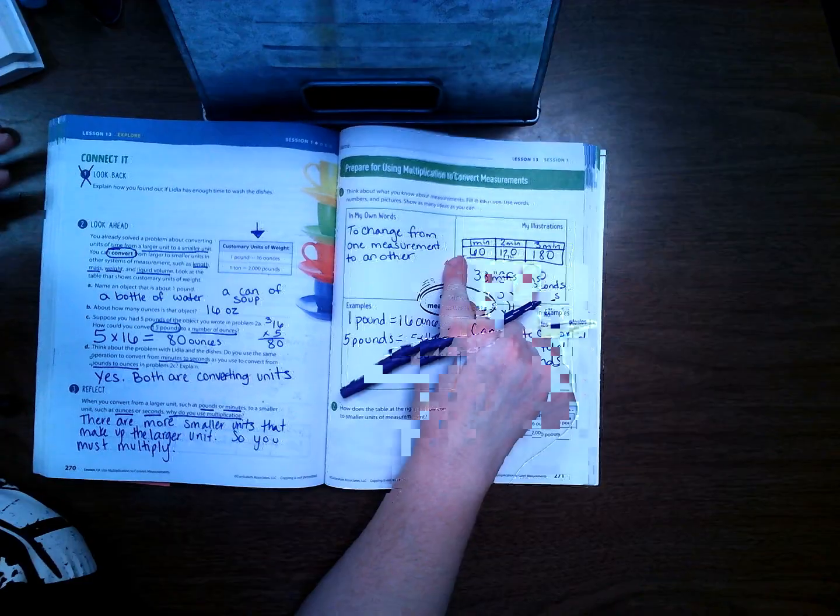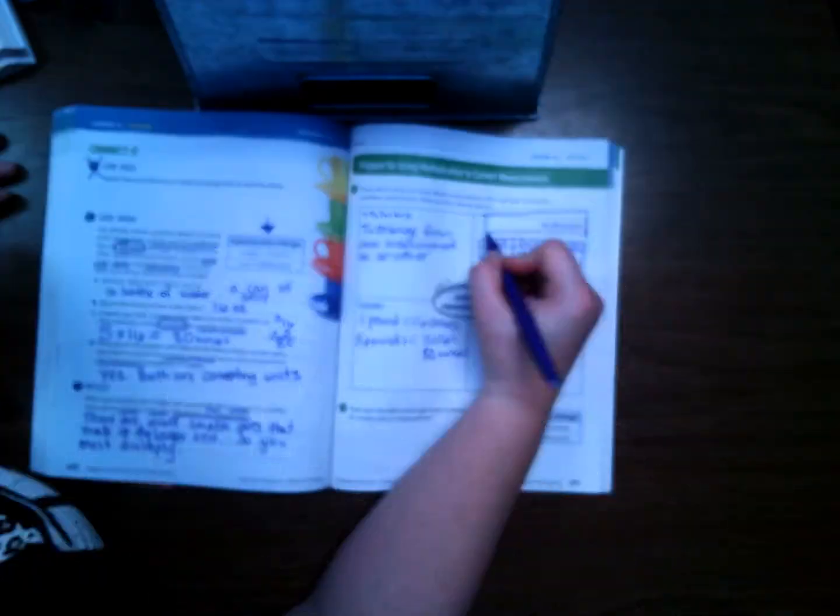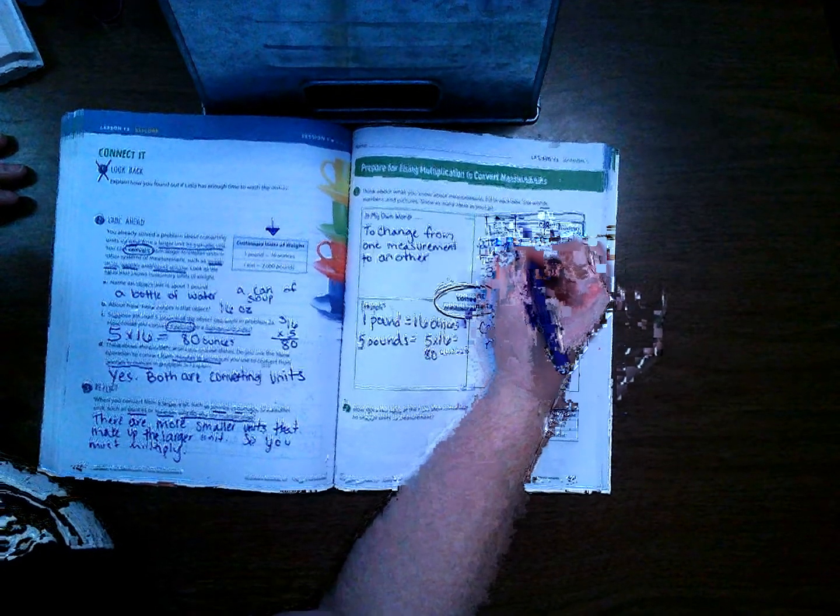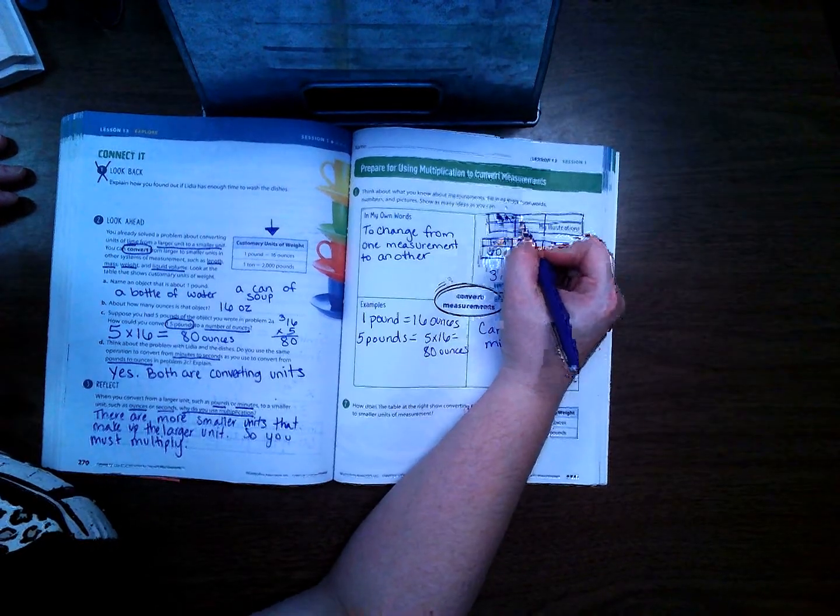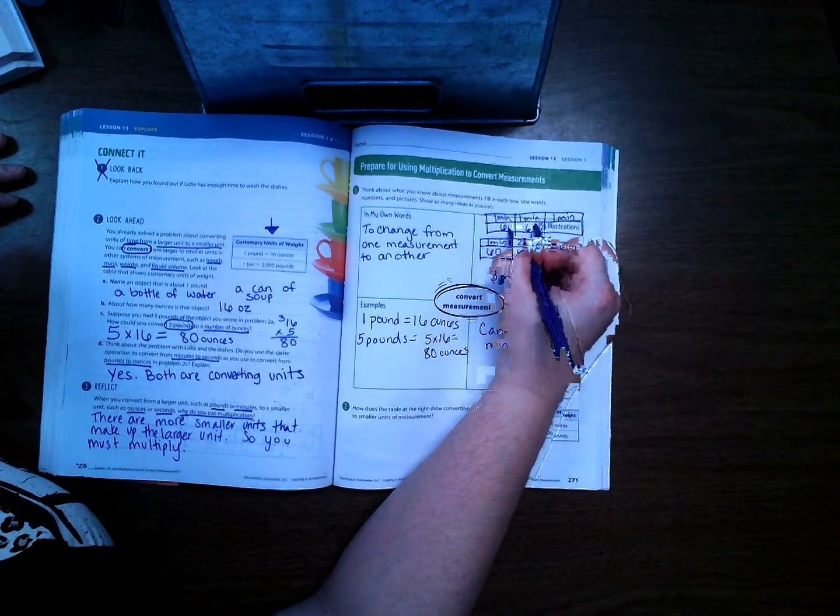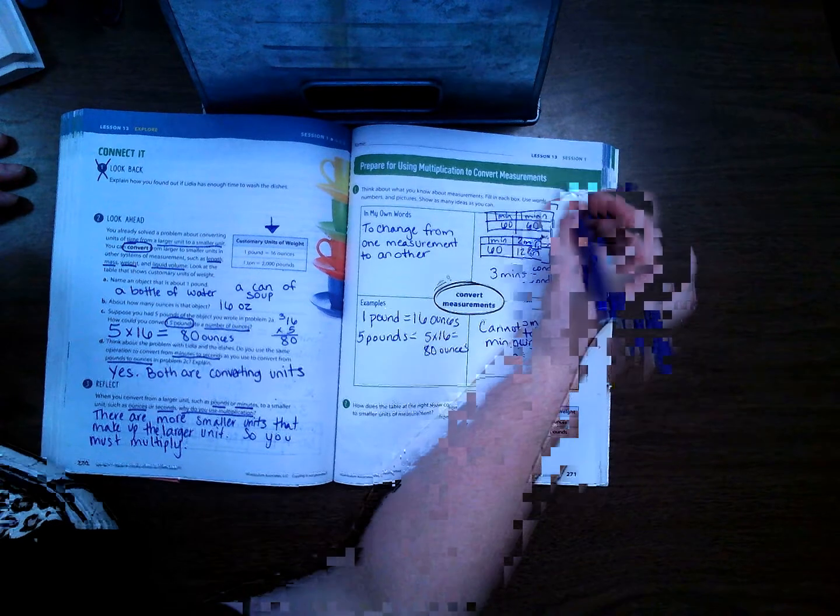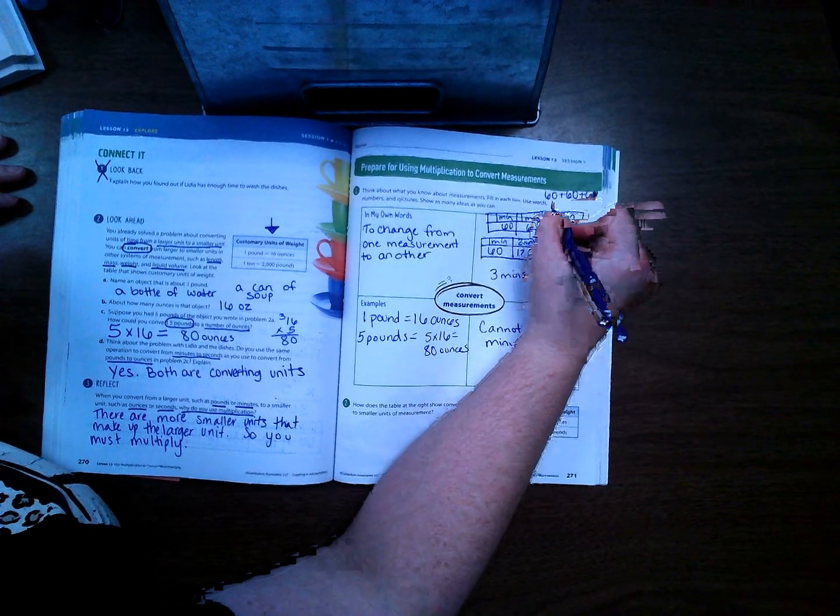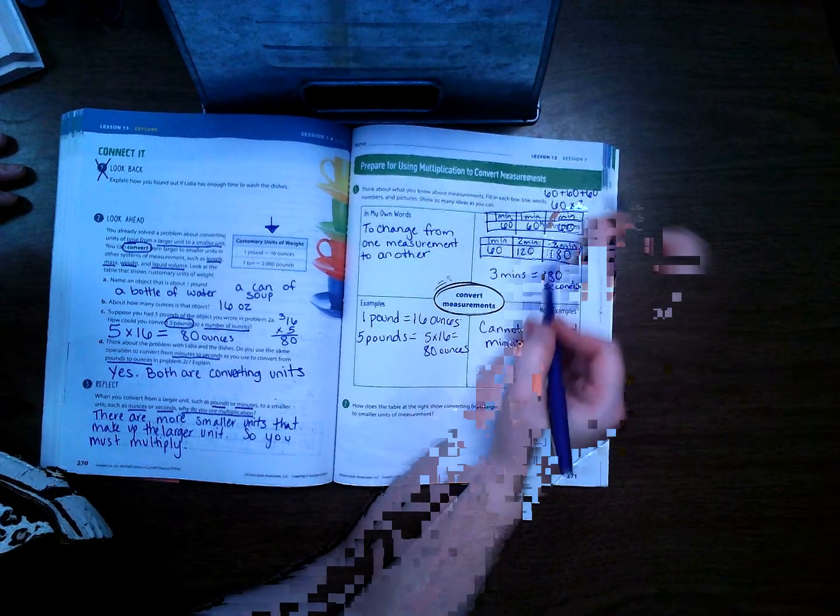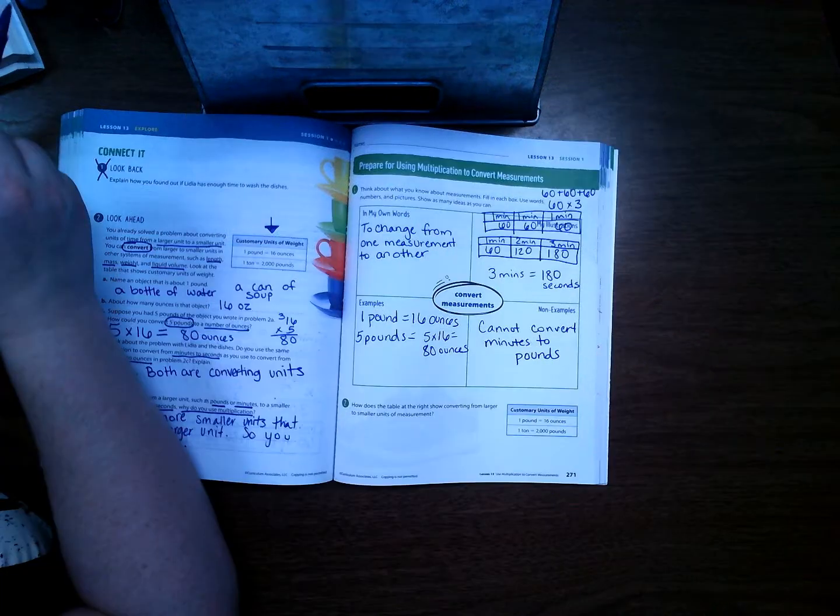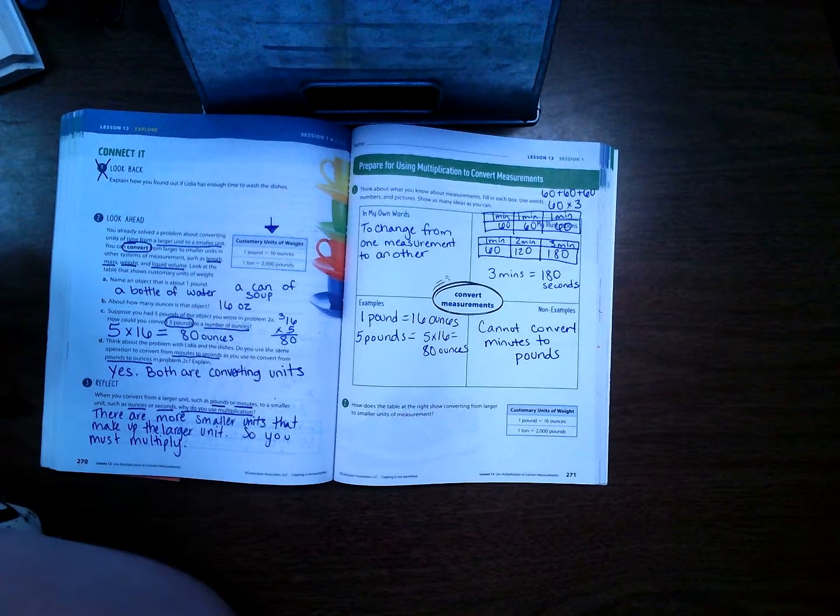I'm going to show you one more way to do this one right here. Some people when they draw this graph, instead of doing 1 minute, 2 minutes, 3 minutes, they do 1 minute, 1 minute, 1 minute, 60, 60, 60, and then they do repeated addition or they do 60 times 3. It's going to get you the same answer. It's just another way to do that model right there, and some of you may prefer that way.